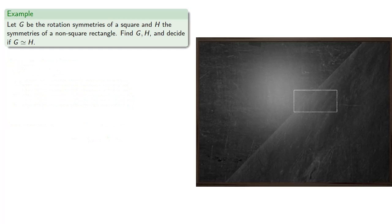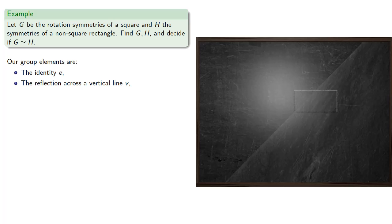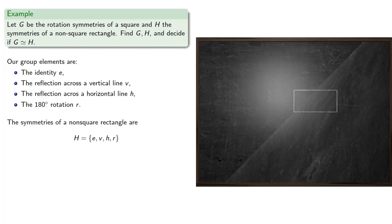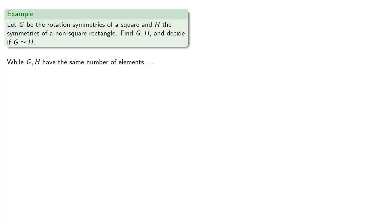For the rectangle, our group elements are the identity (do nothing), the reflection across a vertical line V, the reflection across a horizontal line H, and the 180-degree rotation R. So the symmetries of a non-square rectangle are the set {E, V, H, R}. While G and H have the same number of elements, G has an element R with order four — if you rotate four times, you get back to where you started — but every element of H has order two. This means that G cannot be isomorphic to H.